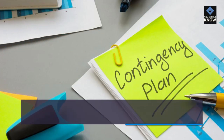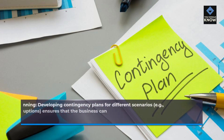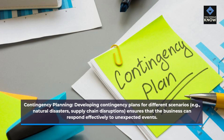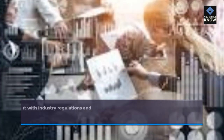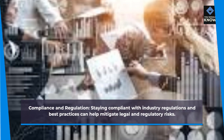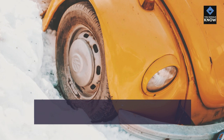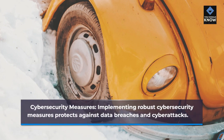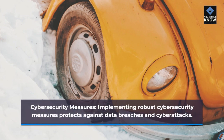Contingency planning: developing contingency plans for different scenarios — e.g., natural disasters, supply chain disruptions — ensures that the business can respond effectively to unexpected events. Compliance and regulation: staying compliant with industry regulations and best practices can help mitigate legal and regulatory risks. Cybersecurity measures: implementing robust cybersecurity measures protects against data breaches and cyber attacks.